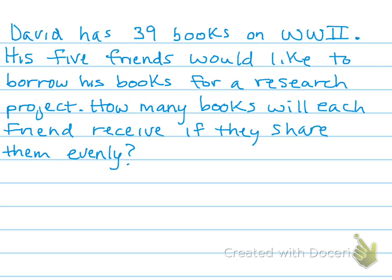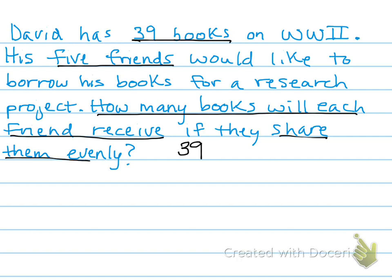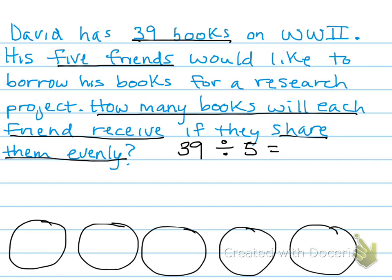One more with the counters. David has 39 books on World War II. His 5 friends would like to borrow his books for a research project. How many books will each friend receive if they share them evenly? It sounds like we're doing 39 books divided by the 5 friends. We're looking for a quotient. Our divisor is 5 so that's how many circles we make: 1, 2, 3, 4, 5. Now we need to make 39 counters.